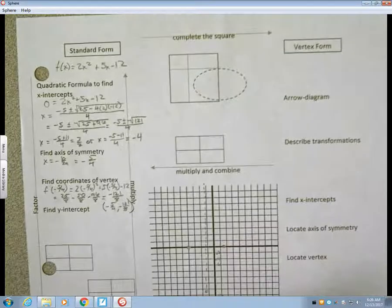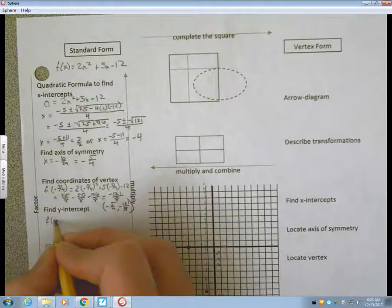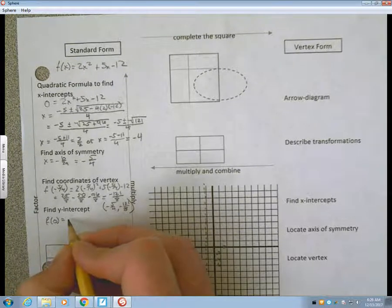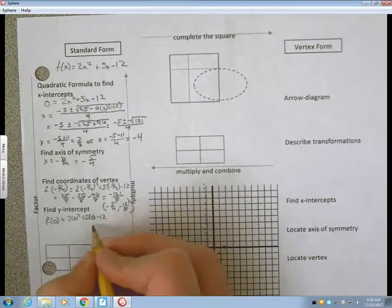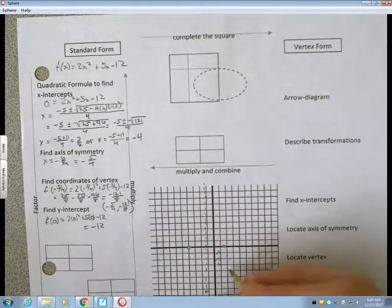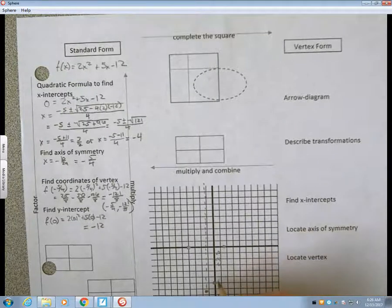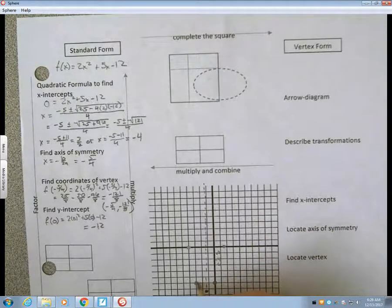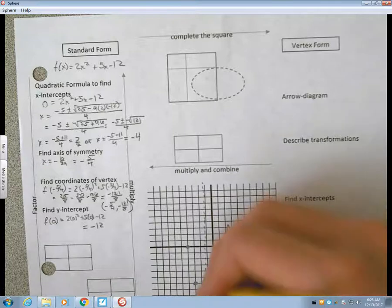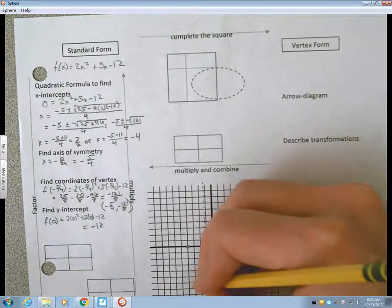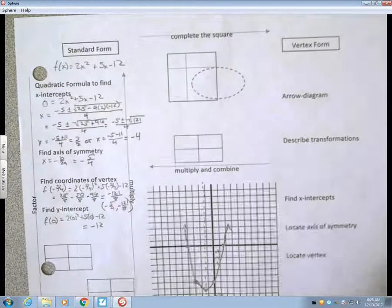My y-intercept is what happens if I evaluate f at 0, which is just going to be 2 times 0 squared plus 5 times 0 minus 12, which is negative 12, 6, 8, 10, 12. So, that's going to hit right there, and by symmetry, I'm also going to have a point right there, so I can see that my parabola is going to look something like that. You have a pretty good idea graphically of what's going on there.